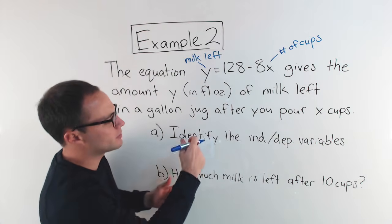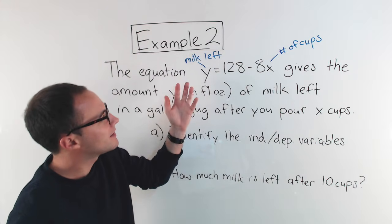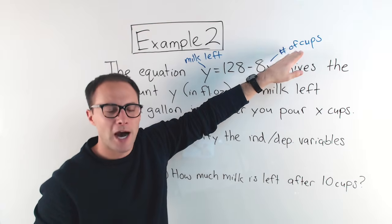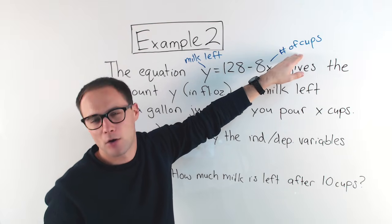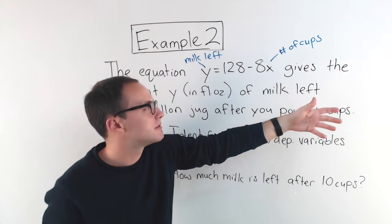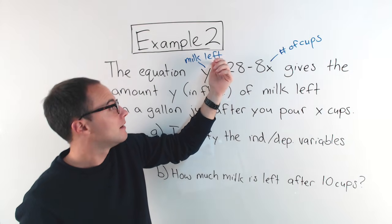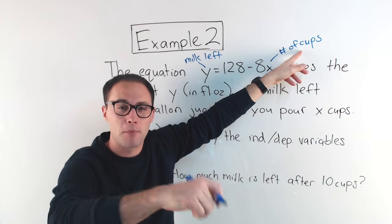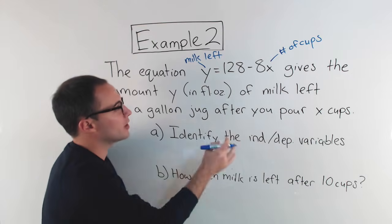So anyway, let's get back to independent-dependent variables. What's the thing that depends on the other thing? Do the amount of cups that we choose, that we pour out, does that depend on anything? No, we choose that ourselves. How about how much milk is left? Does that depend on anything? Well, yeah. The amount of milk left depends on how many cups of milk we pour out. So that should tell you that the dependent variable is the y, which is the milk left.